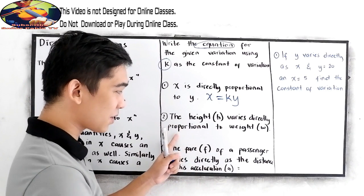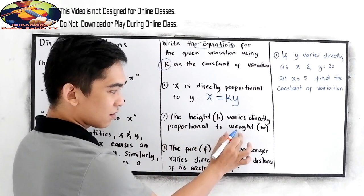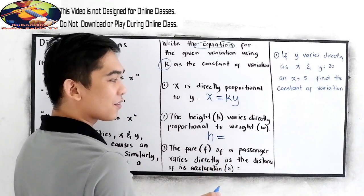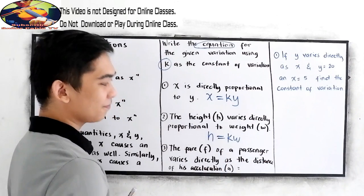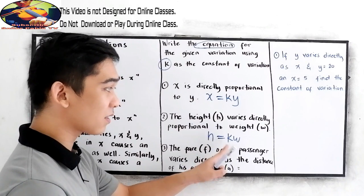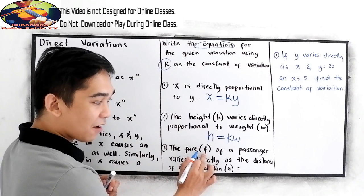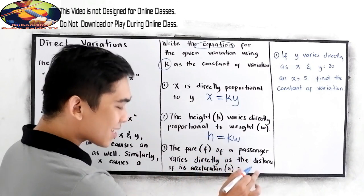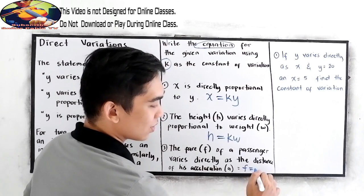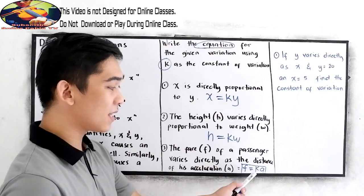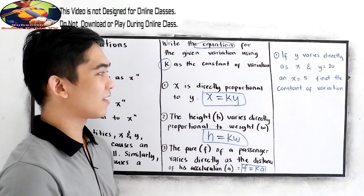To better understand, let's have number two. The height h varies directly proportional to wave — so height varies directly proportional. For the third example, the fare f of a passenger varies directly as the distance of his travel, so f is equal to kd. That will be the equations of our variations. As simple as that in writing the equation.